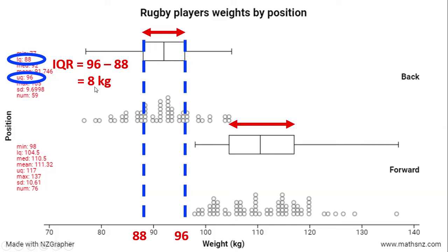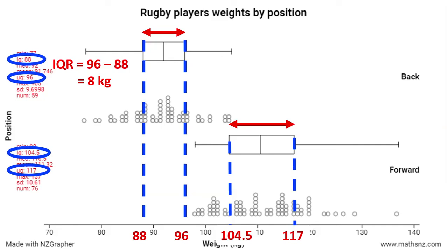Then we want to do the same calculation for our forwards. The lower quartile of the forwards' weight is at 104 kilograms and the upper quartile is at 117 kilograms. So the interquartile range is the distance between 104 and 117 kilograms. The interquartile range for our forwards' weights is 12.5 kilos, which confirms that this number is bigger than the backs' number.